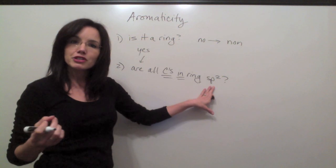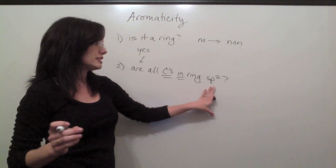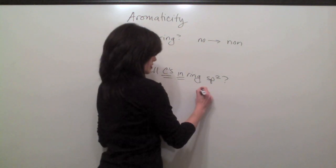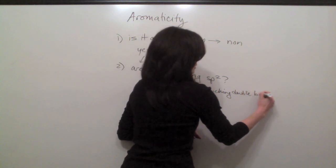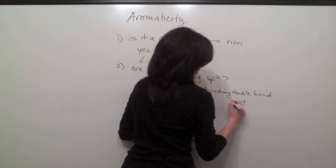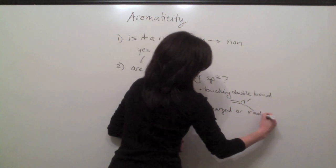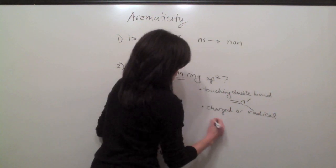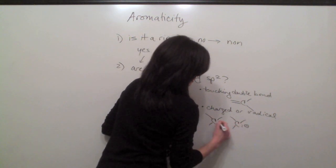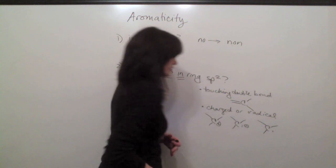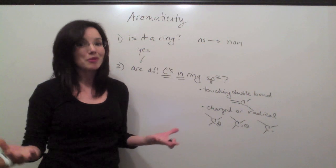So then let's review sp2 real quick. For the purposes of aromaticity, you're going to be able to tell that a carbon is sp2 first if it's touching a double bond. So it'll probably look like this. Or if it's charged or a radical. So you might have a carbocation, a carbanion, or like I said, a radical. Those are your choices of sp2 carbons. And if you have anything else, it's probably not sp2.